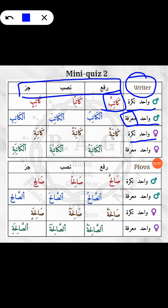Next comes the row for feminine vahid nakra — this is something we practiced in the previous lesson on how to convert a masculine ism into its feminine counterpart. And then lastly you are going to make the marfa form again. You can make a table and write the various forms.